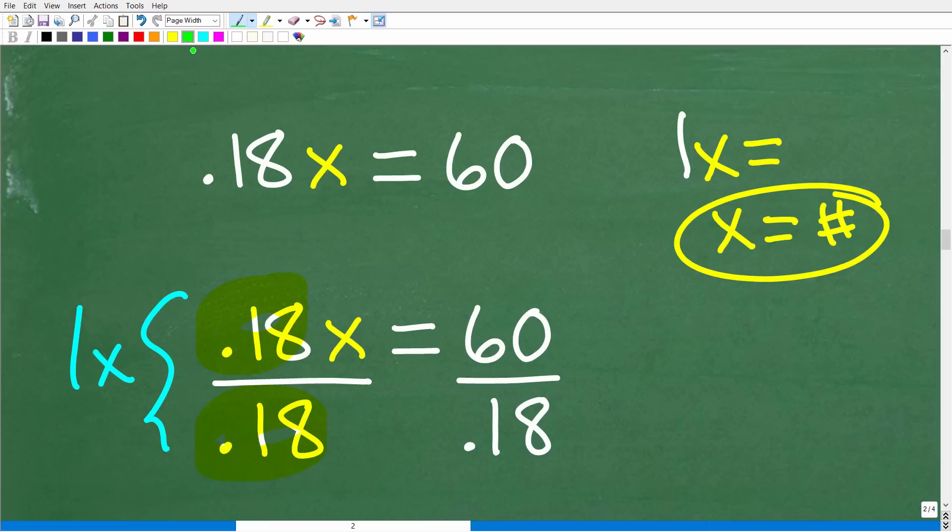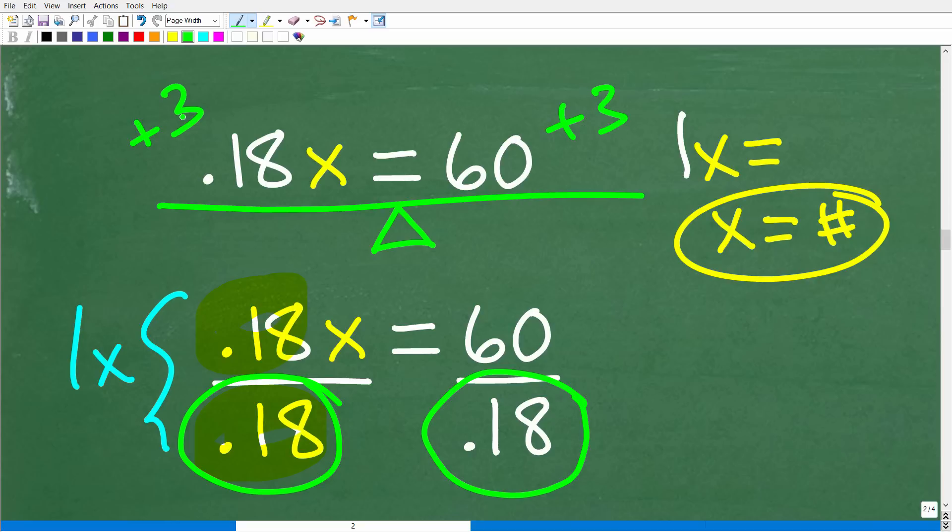But the golden rule in algebra is whatever you do to one side of the equation, you have to do the exact same thing on the other side. So remember, an equation is basically a balanced scale. So you can pretty much do what you want to an equation as long as you do it to both sides. So if I want to add 3 over here, well, no problem as long as I add 3 over here to keep things in balance. So now all we have to do is take 60 and divide it by 0.18.